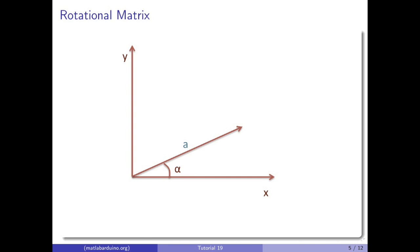Consider a vector of length a that makes the angle alpha with the horizontal axis. The x-coordinate is a times the cosine of alpha, and the y-coordinate is a times the sine of alpha.